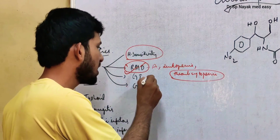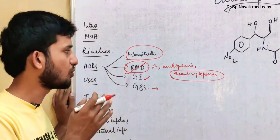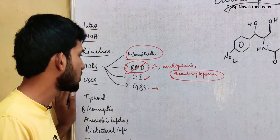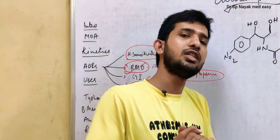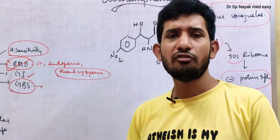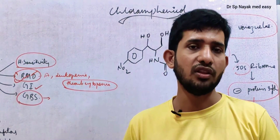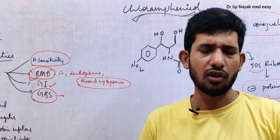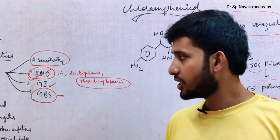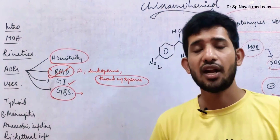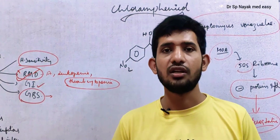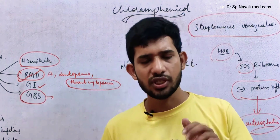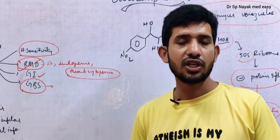GI-related adverse effects are very common — nausea, vomiting, and chronic use of chloramphenicol will disturb the gastric flora causing GI-related disorders. Gray baby syndrome is a very important term to learn about chloramphenicol. When chloramphenicol is given in infants and small children, it disrupts normal functioning and the skin of the children becomes gray in color. That is why it is called gray baby syndrome, which is characterized by disrupted circulation, nausea, vomiting, and systemic adverse effects.